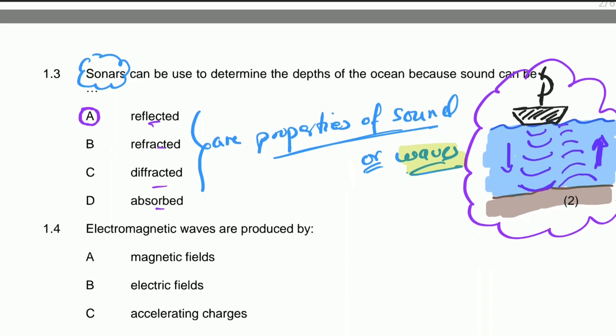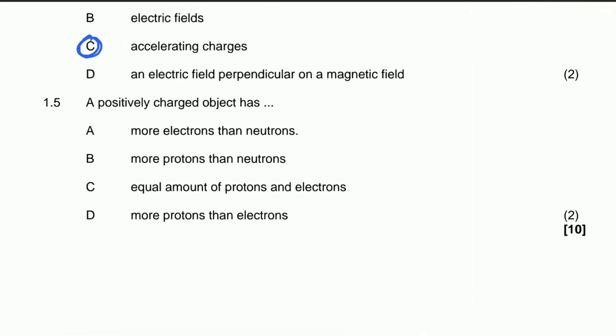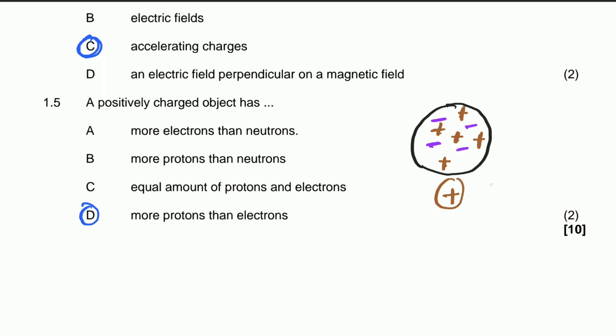Question 1.4: Electromagnetic waves are produced by an accelerating charge, which generates an electric field, and as that electric field changes it generates a magnetic field. That is what you learn at school. Question 1.5: A positively charged object has more protons than electrons — that is the correct answer. If electrons move away from an object, it loses negative charge and is left with more protons than electrons, giving it a positive charge.